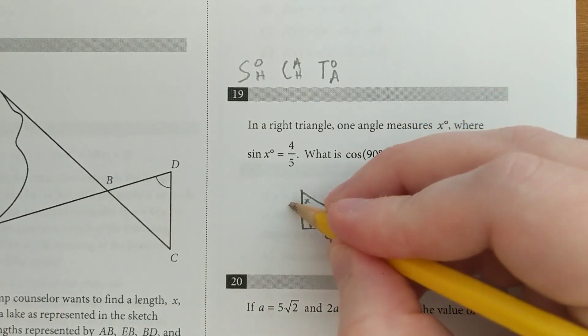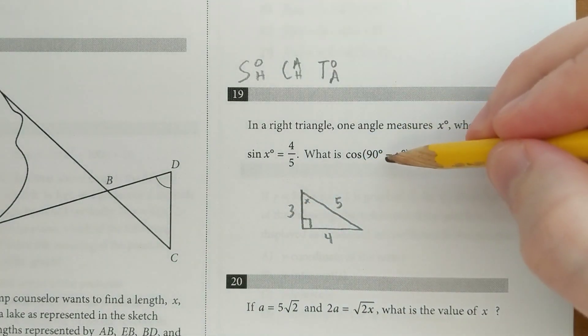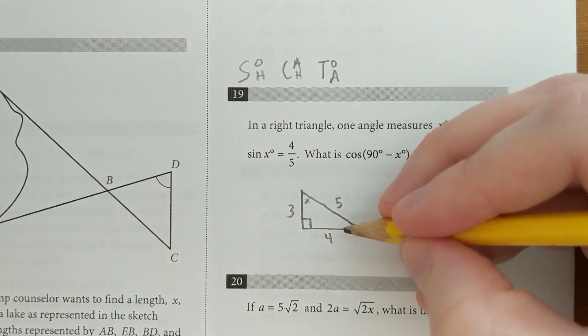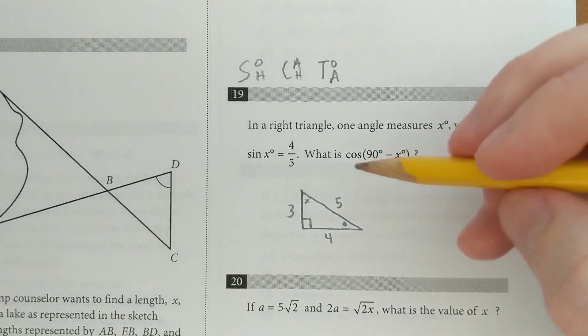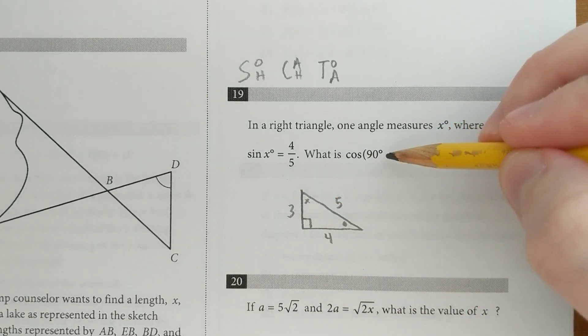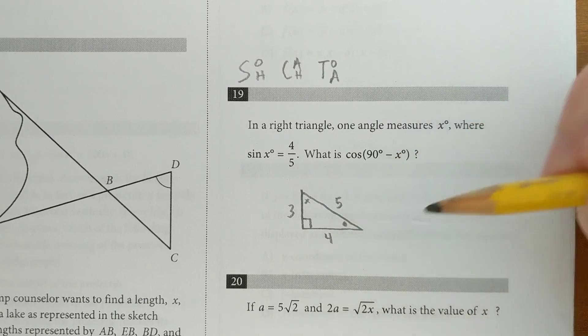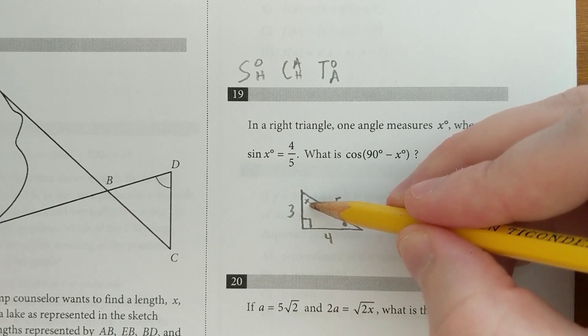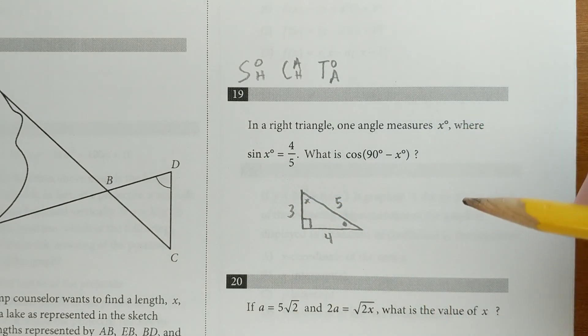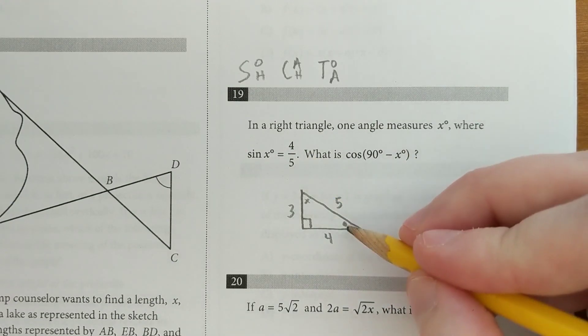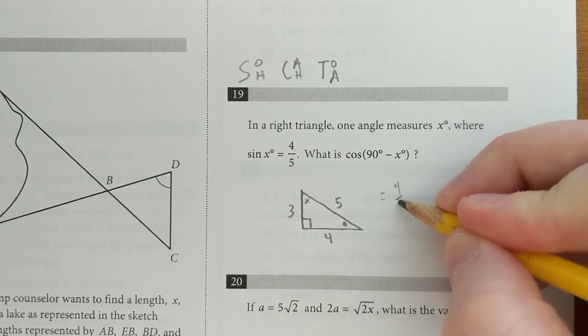It's a 3, 4, 5 triangle, so we know this is 3. Now they want to know the cosine of 90 minus x. Well, 90 minus x just kind of flips you over to this other angle. Like, let's say x was 20, 90 minus 20 would be 70, so it just is referring to the other angle. And like we learned in the last question, the sine of one angle is going to equal the cosine of the other when those two angles add up to 90. So if the sine of x is 4 over 5, the cosine of 90 minus x is also going to equal 4 over 5.